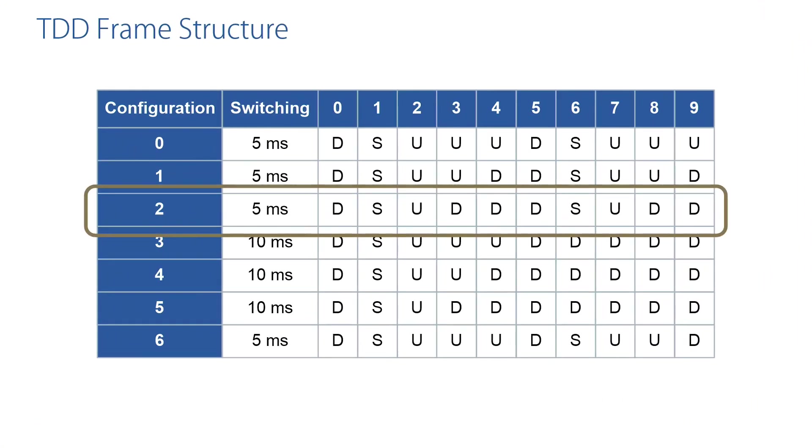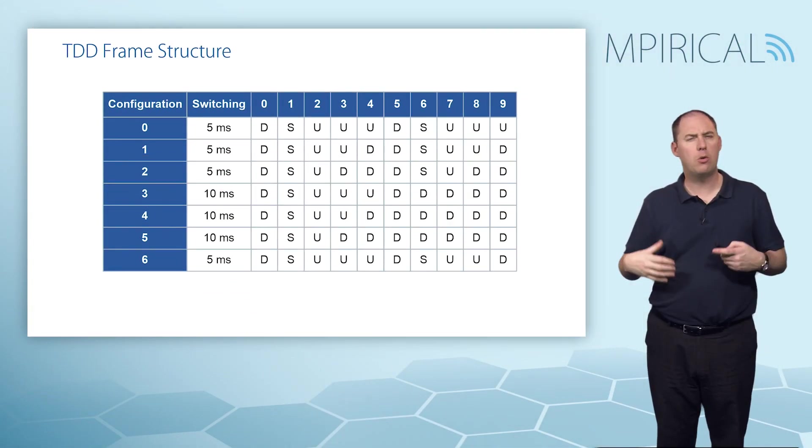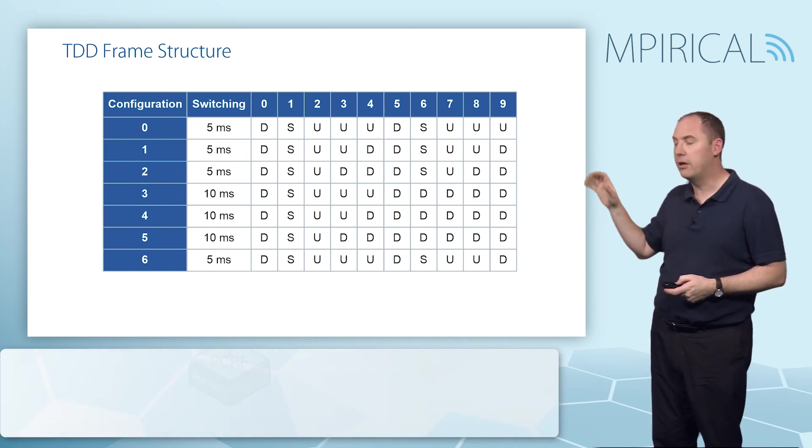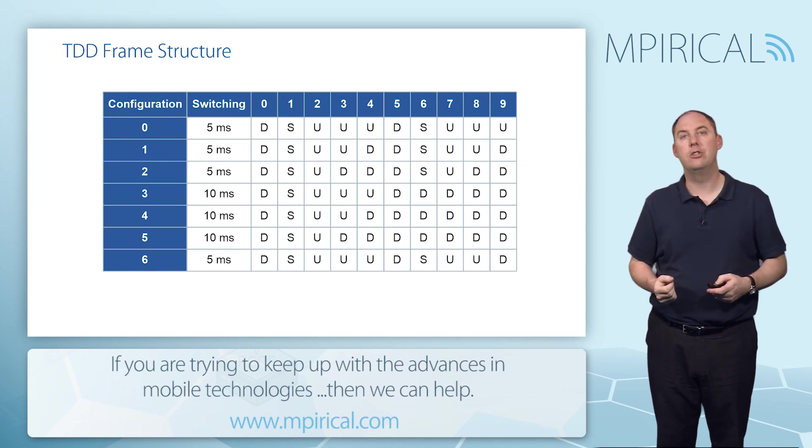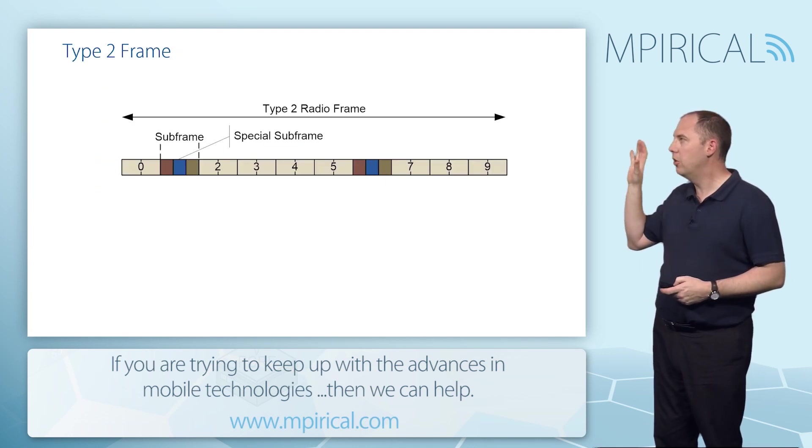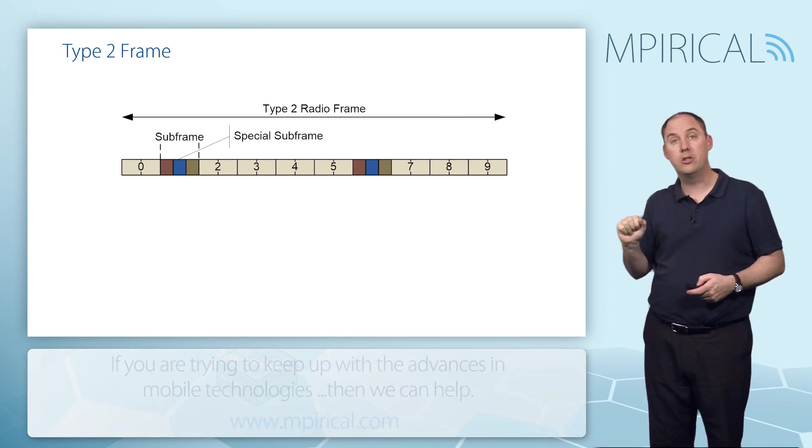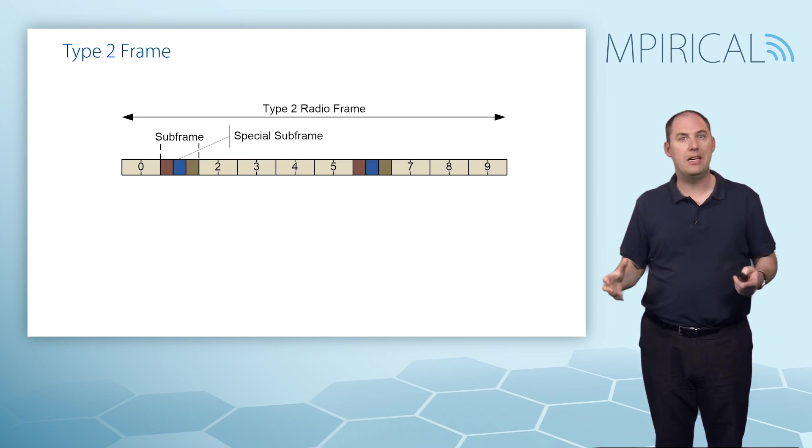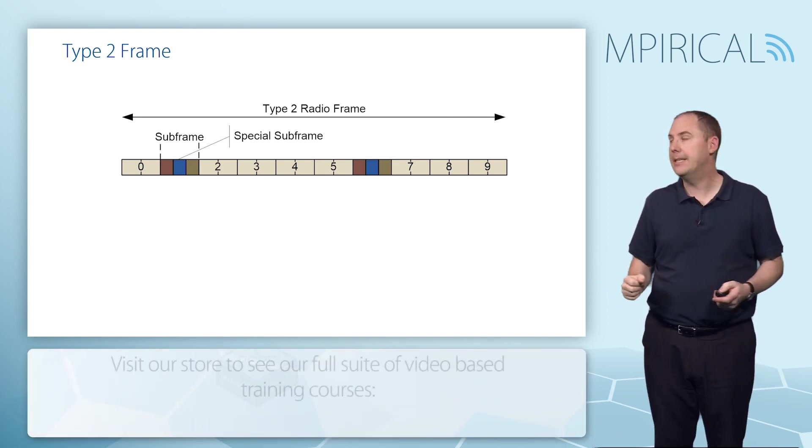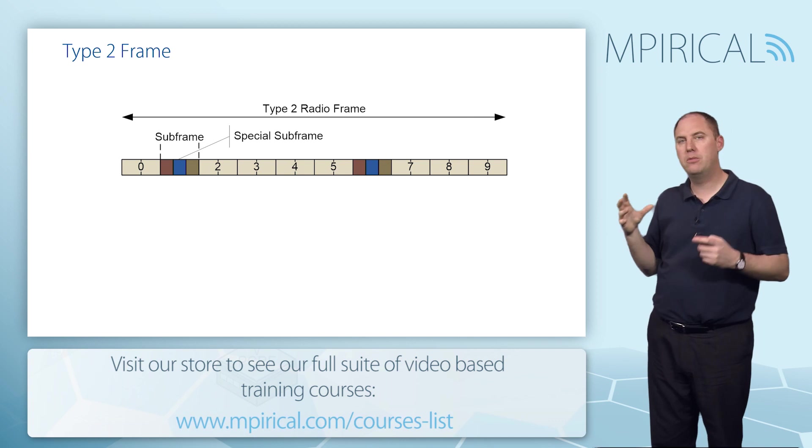In this particular instance, we've got downlink frames, two uplink frames, and two special frames, so it's quite asymmetric. There's more going in the down than in the uplink direction. Obviously, the different configurations provide for different configurations of asymmetric allocation. If we looked at configuration number two, this is called frame type two, by the way. Frame type one is FDD, frame type two is TDD. In this particular example, I'm using the scenario of configuration number two.